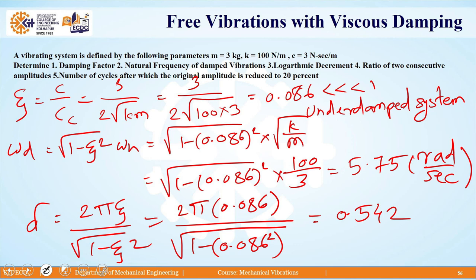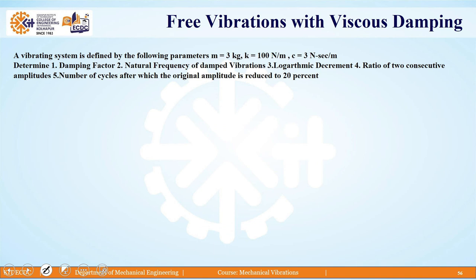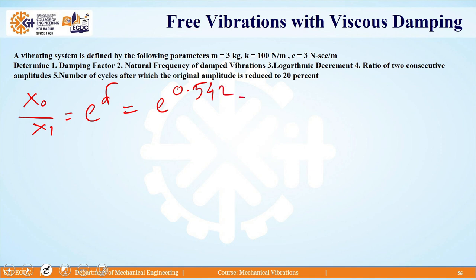The next parameter is the ratio of two successive amplitudes. Remembering delta as 0.542, to get the ratio of successive amplitudes x0 by x1, we take e raised to delta. So e raised to 0.502 gives the amplitude ratio as 0.972.